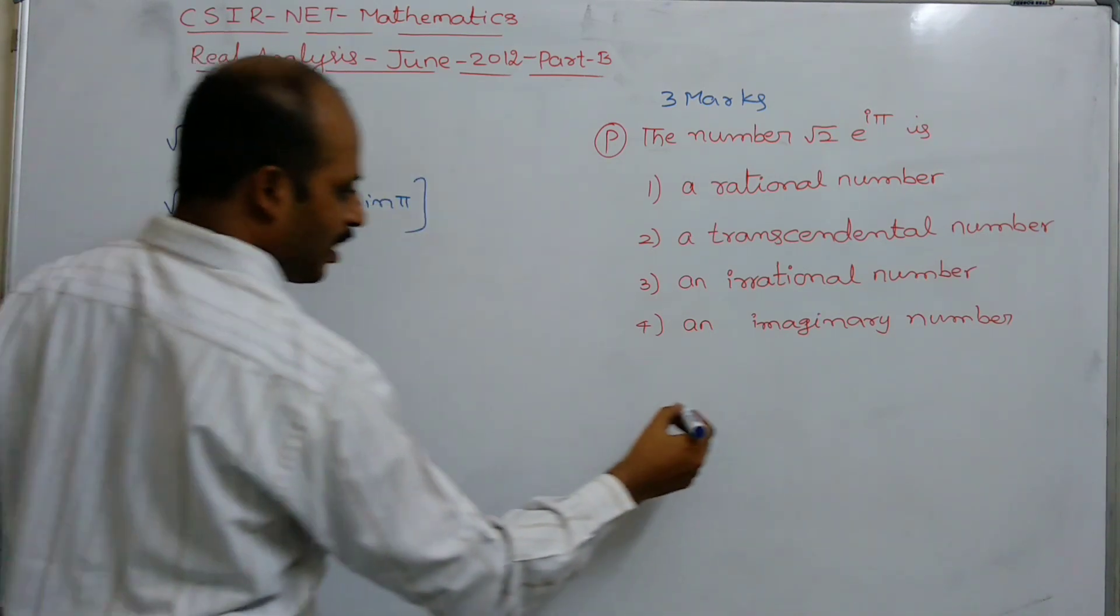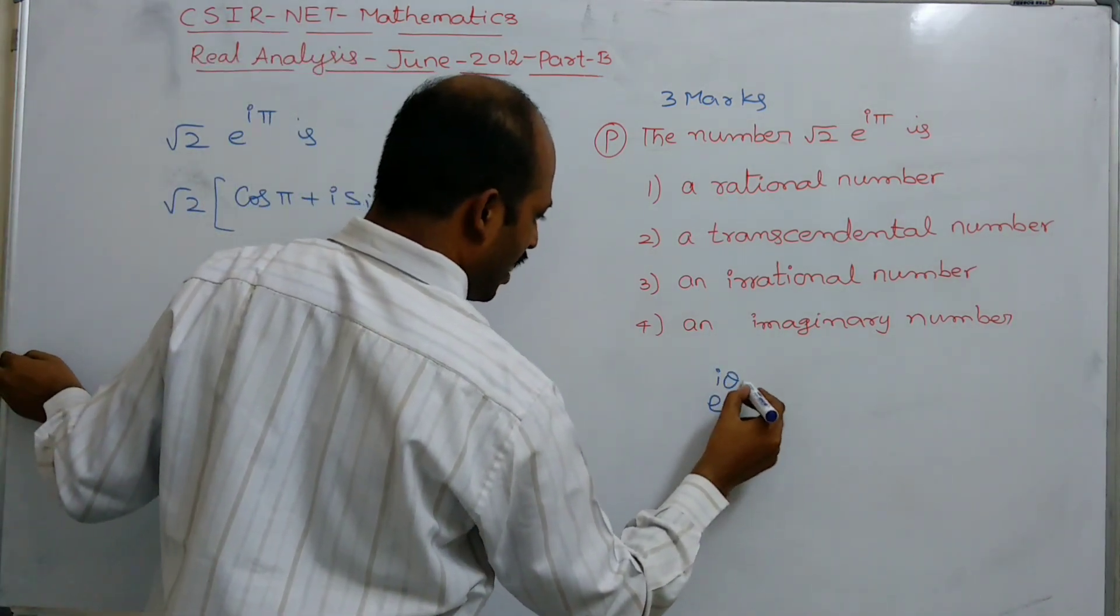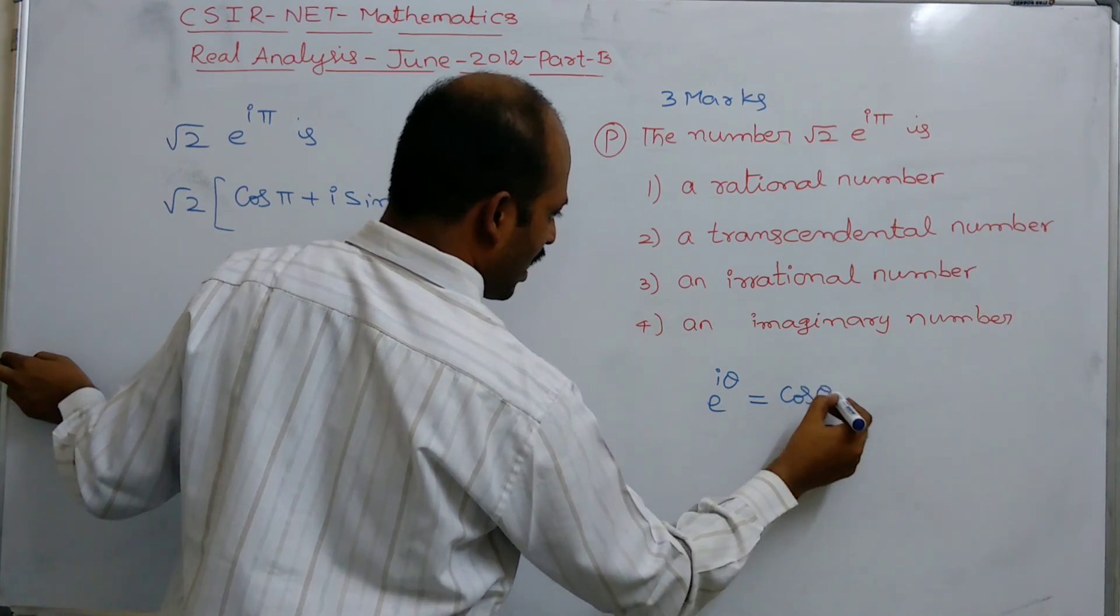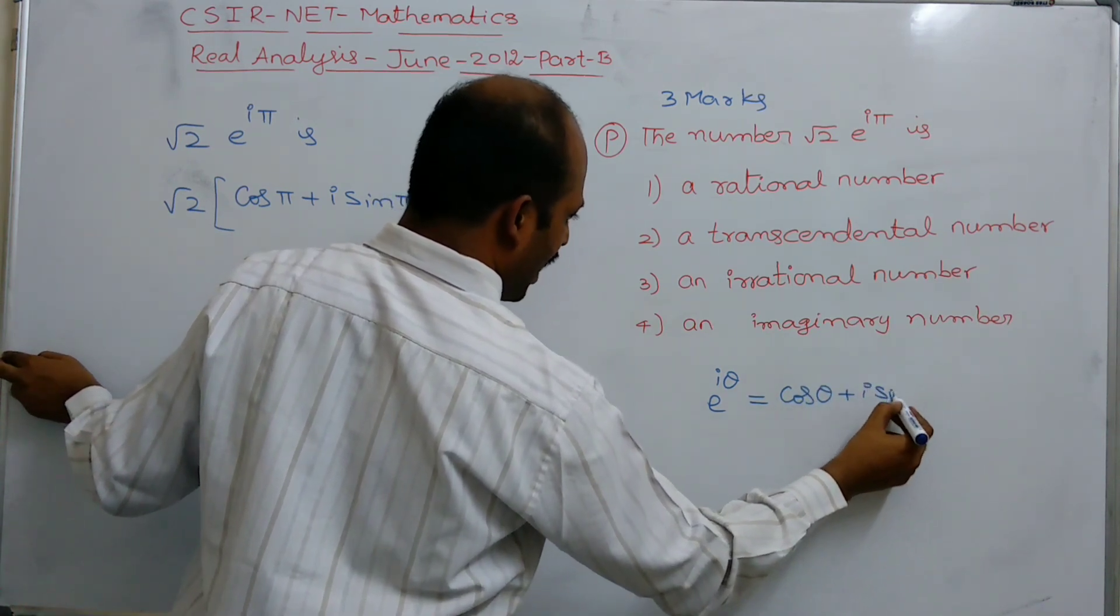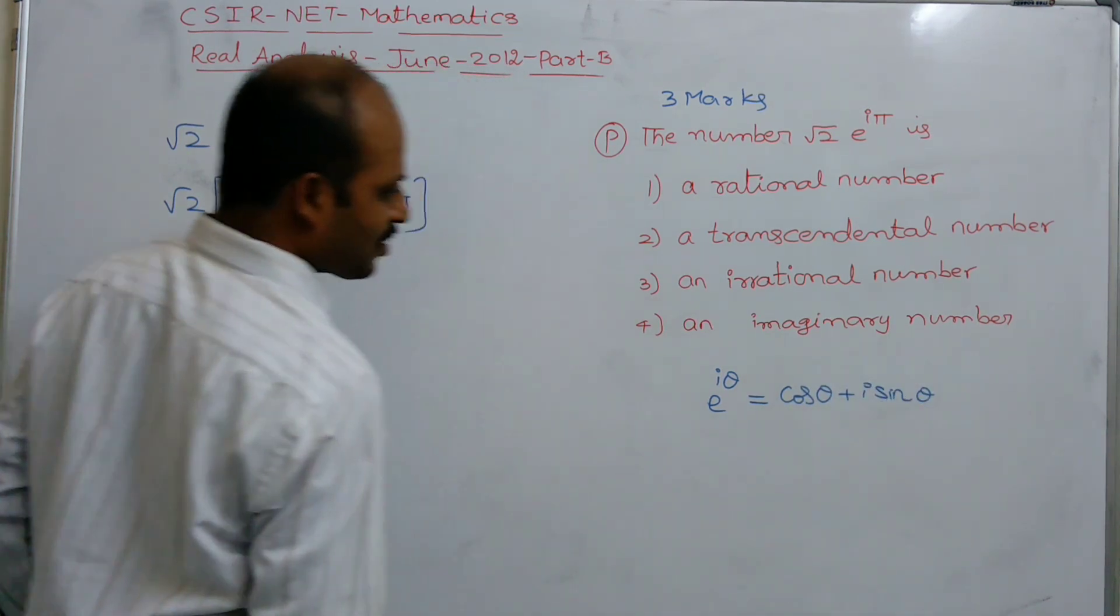What is Euler's formula? e^(iθ) = cos θ + i sin θ, which is known as Euler's formula.